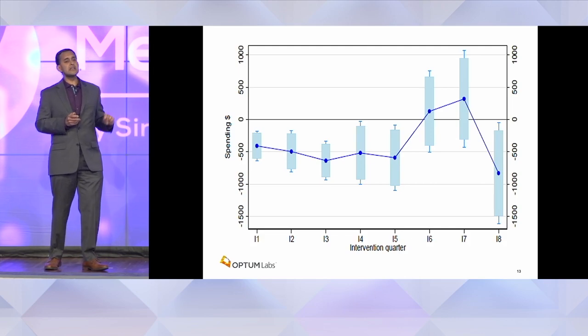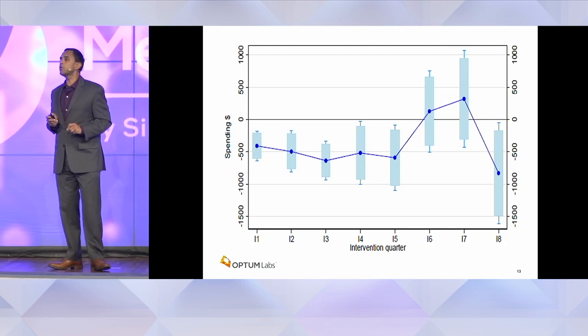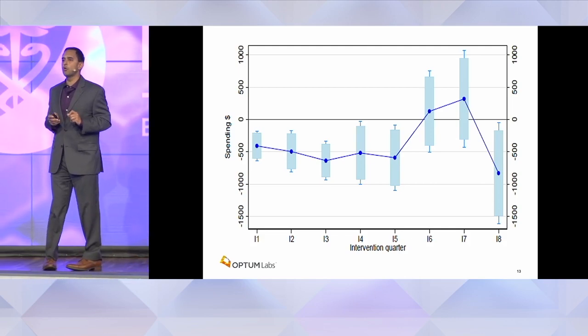Under the Affordable Care Act at CMS, a special fund and award was given to the YMCA to deploy the Diabetes Prevention Program in community-based settings. To scale it, you've got to get to where the people are — where the YMCAs are. The YMCAs demonstrated significant reduction in total cost of care in a matched cohort group.